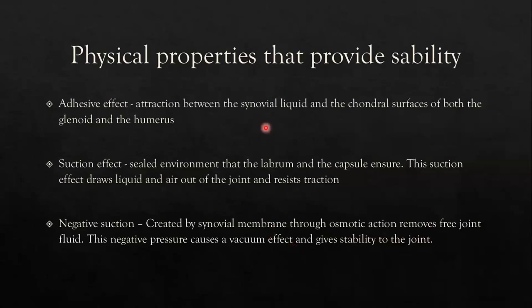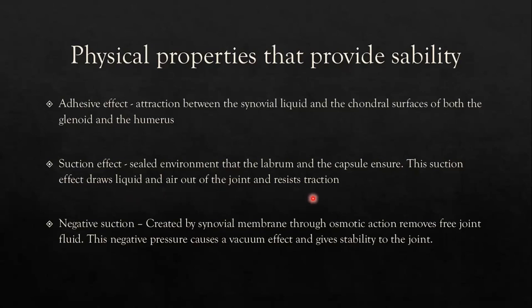Another factor for biomechanical stability is the adhesive effect, suction effect, and negative suction. Similar to two glass slides held together by a drop of water — the force required to pry them apart is extremely strong — the shoulder joint achieves stability through attraction between the synovial fluid and the chondral surfaces of both the glenoid and humerus. The synovial membrane actively removes fluid and gas from the joint, creating a suction effect that resists traction. A negative pressure from the synovial membrane through osmotic action creates a vacuum effect and gives additional stability to the joint.